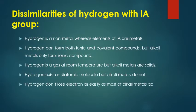Now let's look at the dissimilarities between hydrogen and alkali metals. The first dissimilarity: hydrogen is a non-metal, whereas Group 1A elements — as their name suggests — are alkali metals. Metal and non-metal are two different things. That is the first difference.